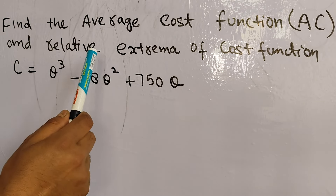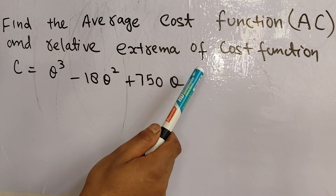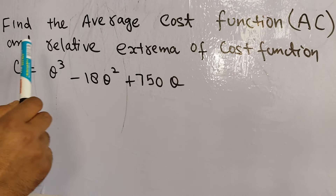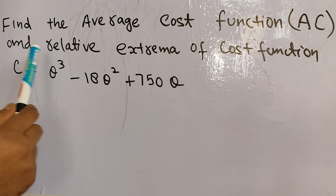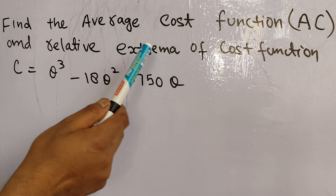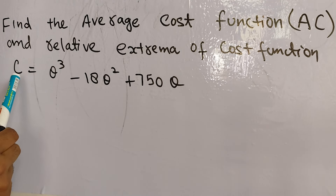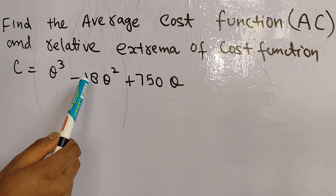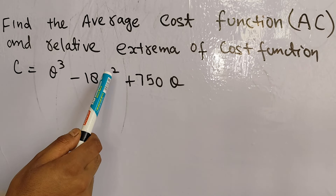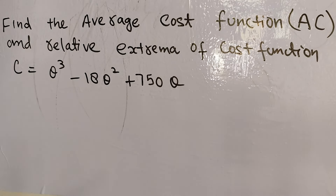Let us find the average cost function and the relative extrema. The question is: find the average cost function and relative extrema of the cost function C equal to Q cubed minus 18Q squared plus 750.